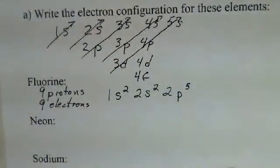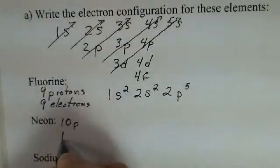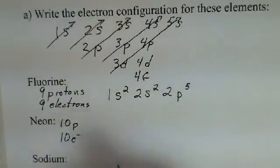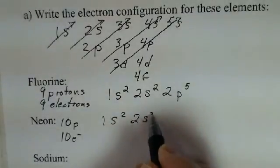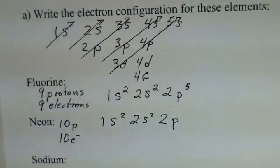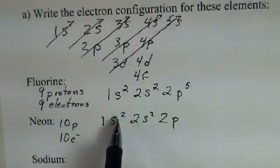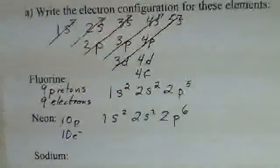Our next atom to consider would be neon. It has 10 protons, so it has 10 electrons. Same start here. What should we put in for the 2p state? There are 10 electrons. I've used up 4. There are 6 left. And 6 is what the p state can hold.